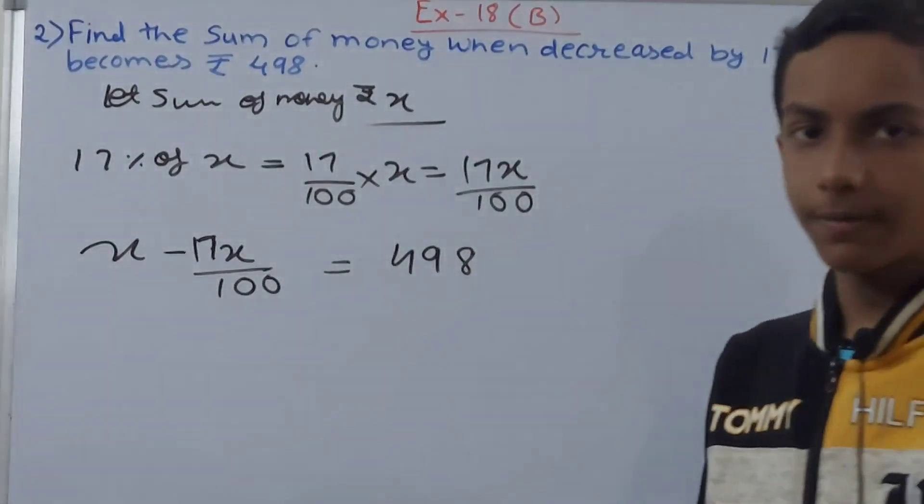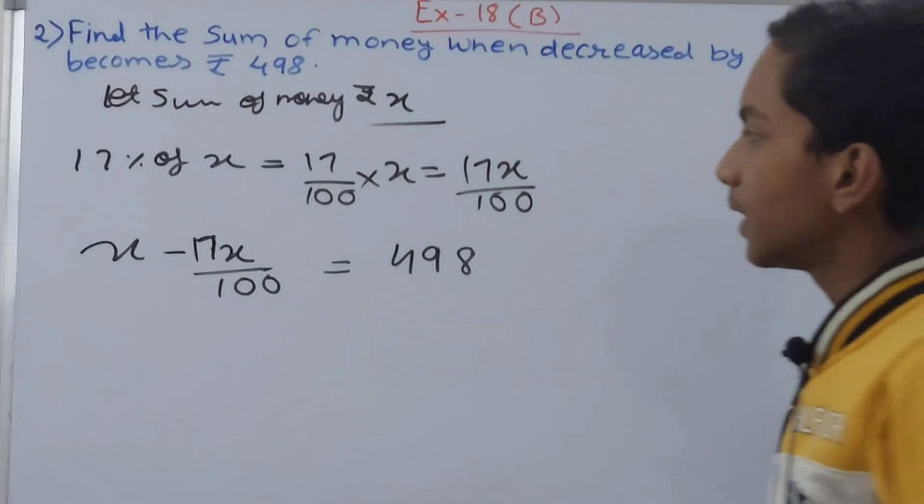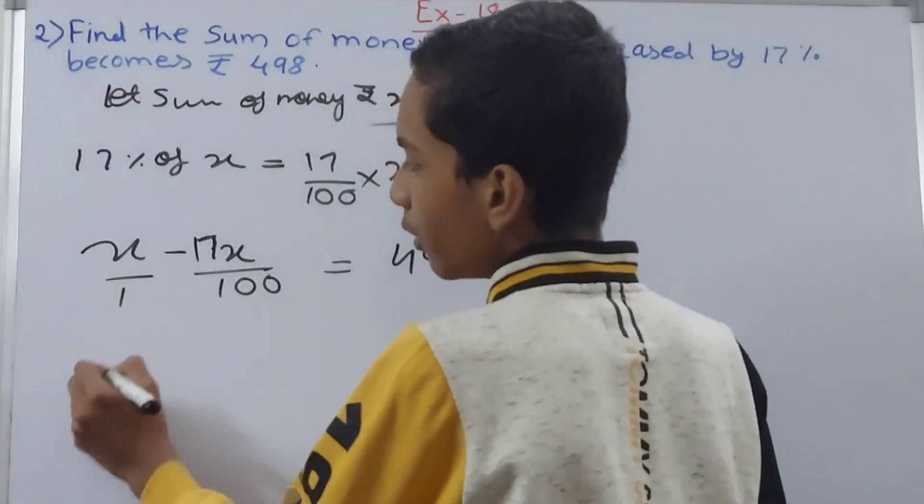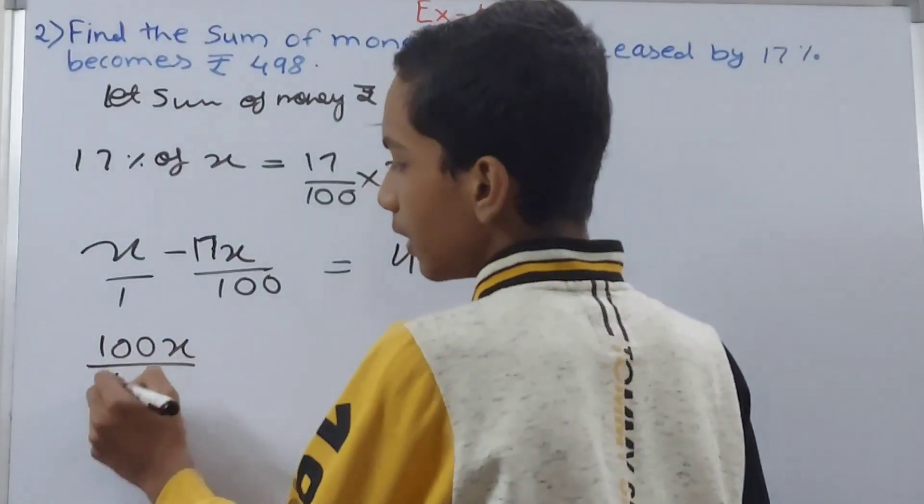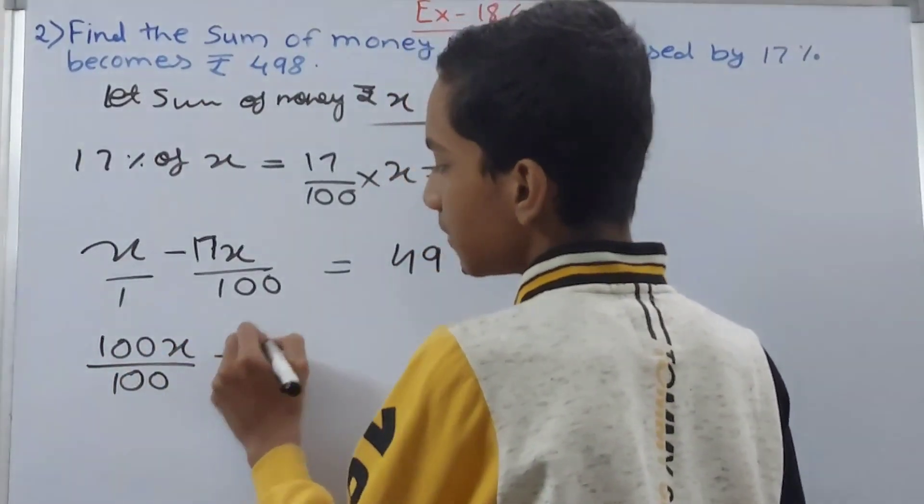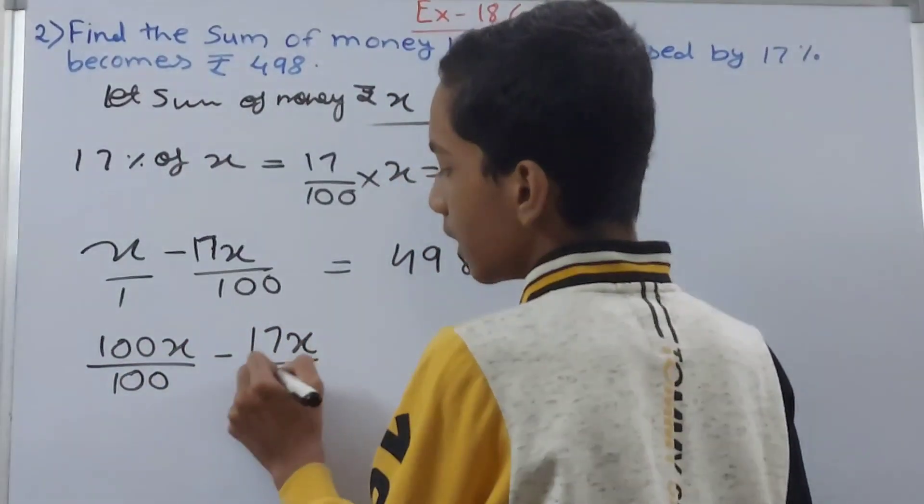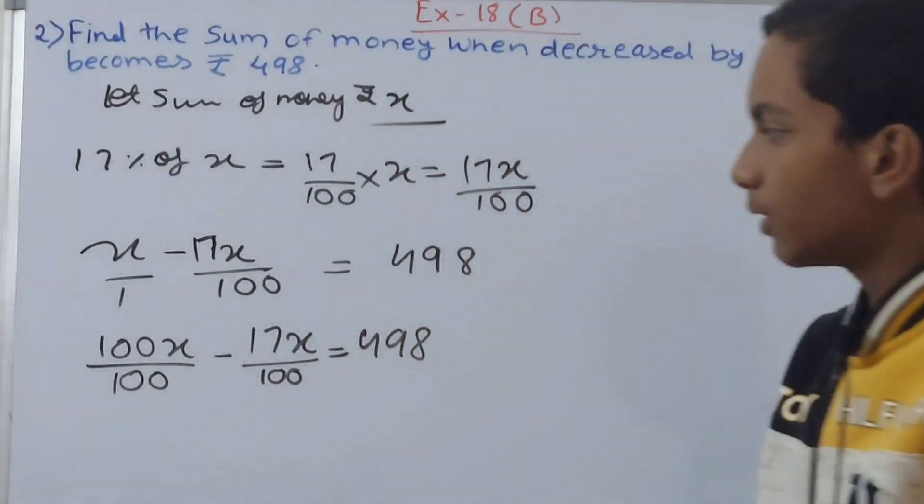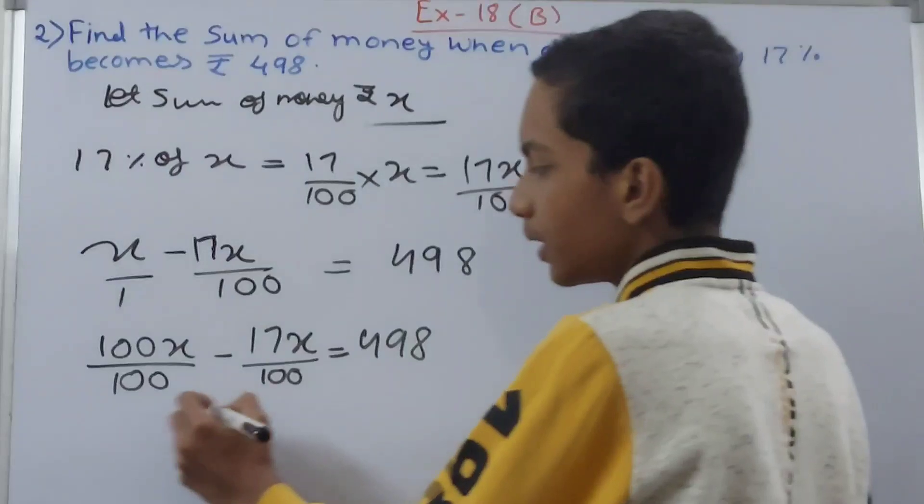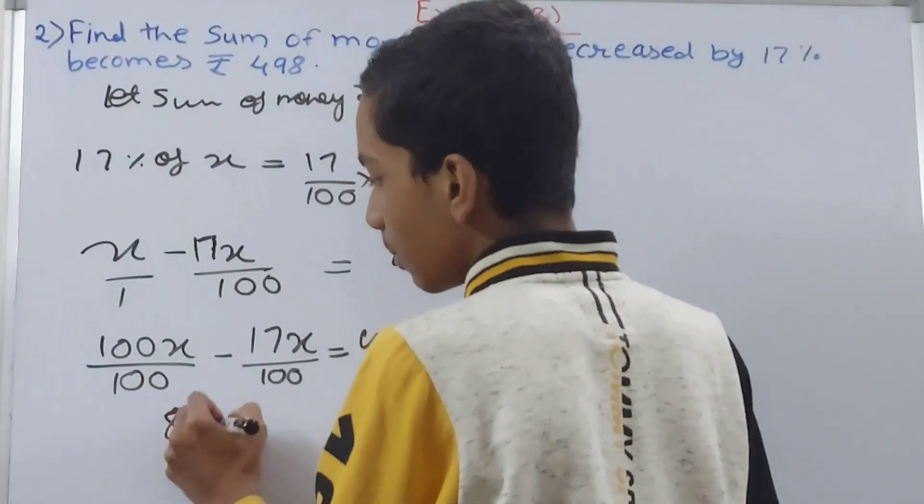Let's solve this. This is x upon 1, so convert that to 100x upon 100. Then 100x upon 100 minus 17x upon 100 equals 498. This becomes 83x upon 100 equals 498.